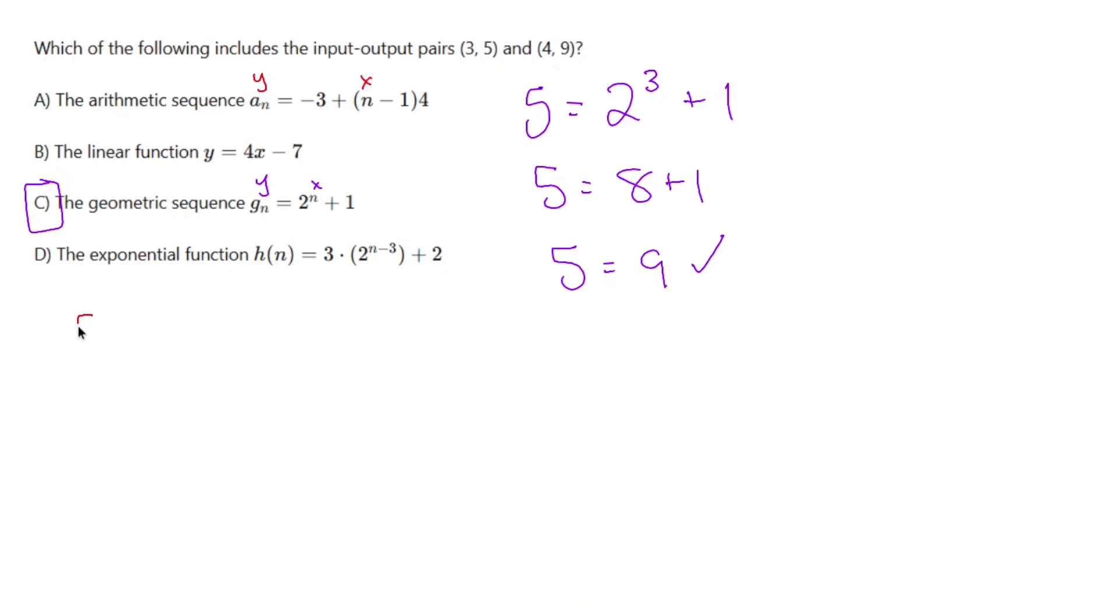So 5 should equal -3 + (3-1) times 4. 5 should equal -3 + 2 times 4. 5 should equal -3 + 8. 5 equals 5. Yes!